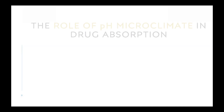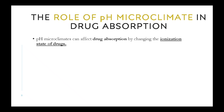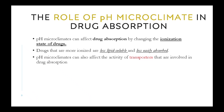The role of pH microclimate in drug absorption: pH microclimates can affect drug absorption by changing the ionization state of drugs. Drugs that are more ionized are less lipid soluble and less easily absorbed. pH microclimates can also affect the activity of transporters that are involved in drug absorption.